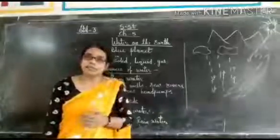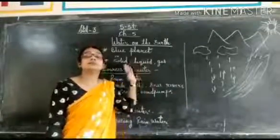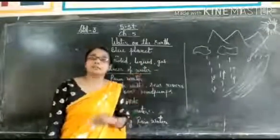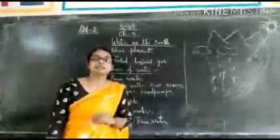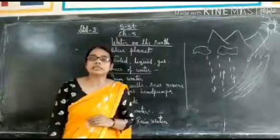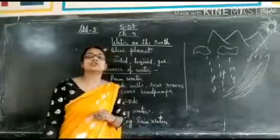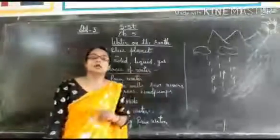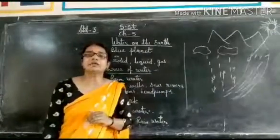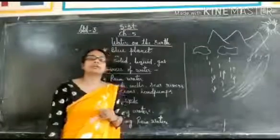Our earth is known as the blue planet because major part of the earth's surface is covered with water. The water on the earth is present in three natural forms of solid, liquid and gas.